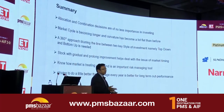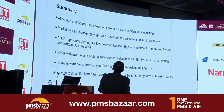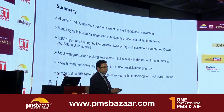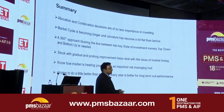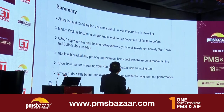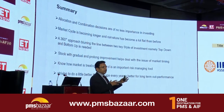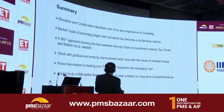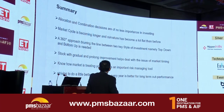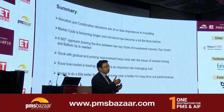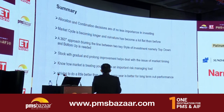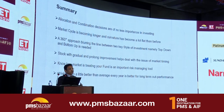To summarize three key learnings: first, allocation and combination decisions are no less important than stock picking — market cycles have become longer and the curvature has become flat. Second, a comprehensive approach blurring the line between macro and bottom-up investing is what the next decade requires. Third, stocks with gradual and prolonged improvement help deal with the issue of poor market timing. And knowing how the market is punishing or rewarding your portfolio through time-swing analysis is a good way to proactively manage risk. Striving to do a little better than average every year is the formula for better long-term performance.